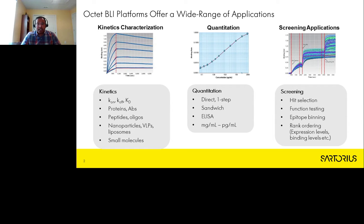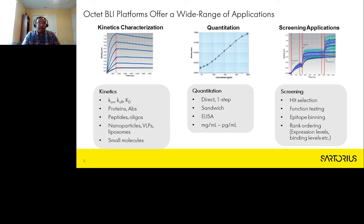Octet platforms are also used in quantitative applications, performing immunoassays for biologics quantitation where users can adopt a direct one-step, sandwich, or multi-step assay format to achieve sensitivities from milligrams per mL to picograms per mL. Octet ELISAs are rapid and efficient — quantitation of a full 96-well plate of IgGs can be done in two minutes with the HDX. Octet platforms are also ideal as a screening tool for hit selection, functional activity testing, epitope binning, or rank ordering for protein expression analysis.